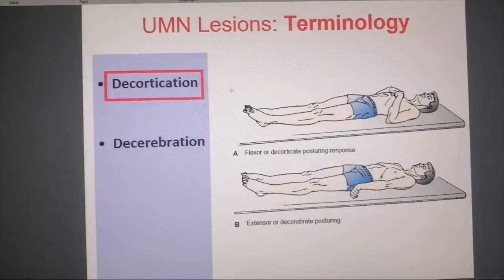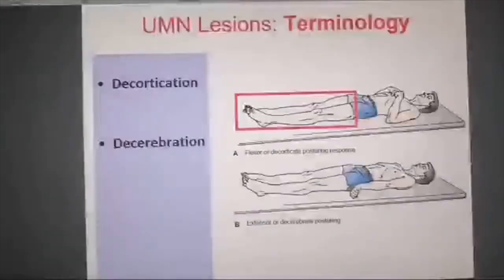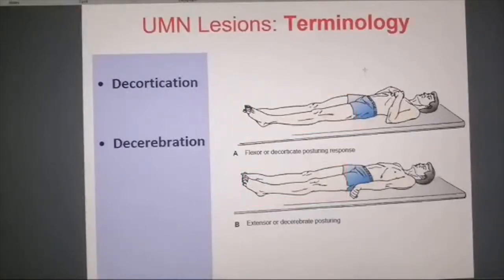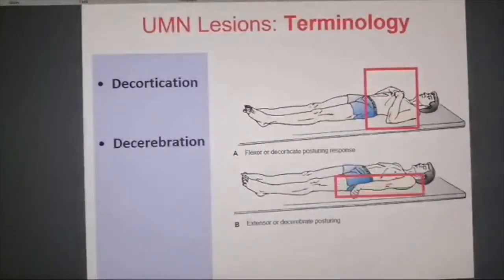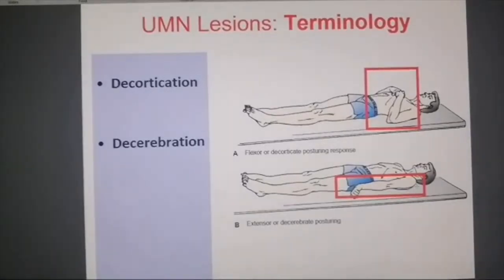This is the decortication posture of the patient. You can clearly see the difference — stretched out limbs. The neck should be extended as well in both postures. However, look at the upper limbs. The upper limbs are not similar. Why would there be flexion of the upper limbs in decortication? Because of the red nucleus.